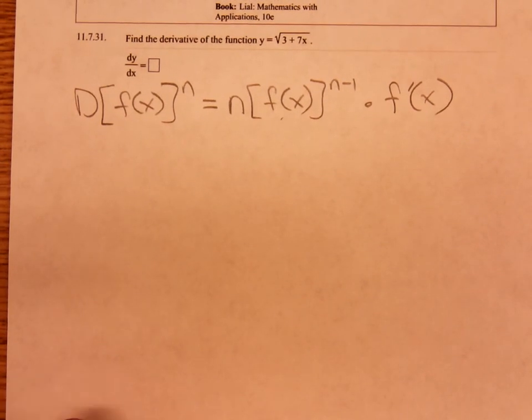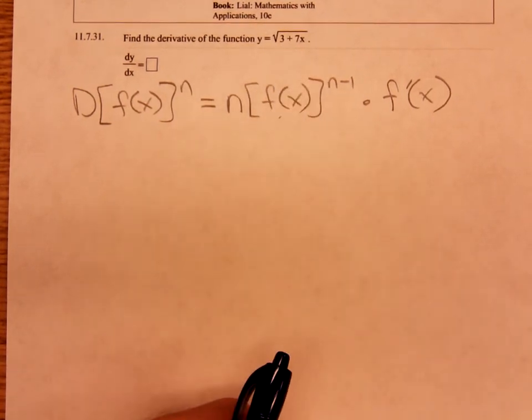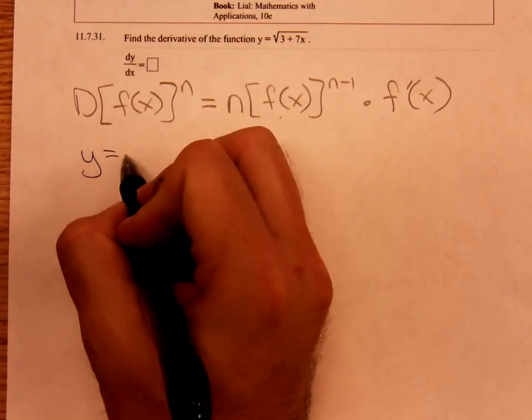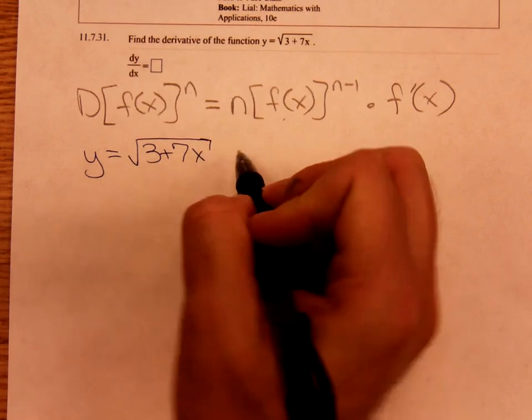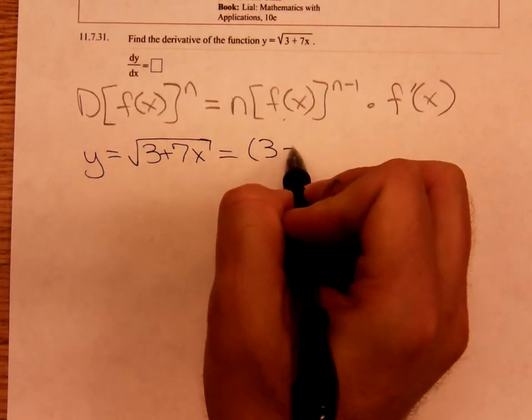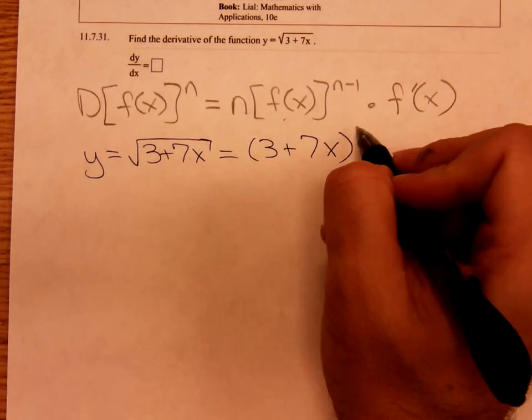We're going to need to use that for this problem here. Whenever you see a function involved in a radical, you have to rewrite it using an exponent. How are you going to rewrite that square root of 3 plus 7x? That's the same thing as 3 plus 7x to the one-half power.